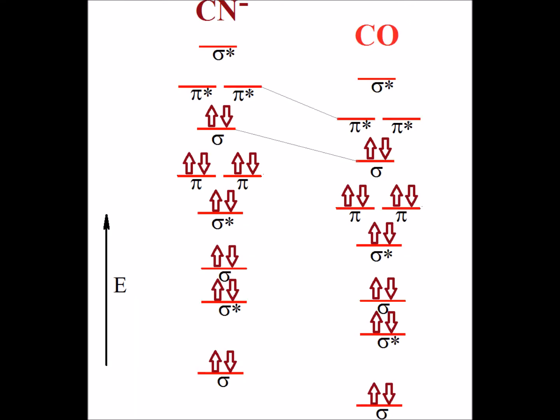If we compare the relative energies of the MOs of cyanide and carbon monoxide, we notice that each of the orbitals is lower in energy for carbon monoxide as opposed to cyanide, because oxygen has a greater nuclear charge than does nitrogen. As a result, the sigma orbital of cyanide, the highest filled sigma orbital, is higher in energy for cyanide.